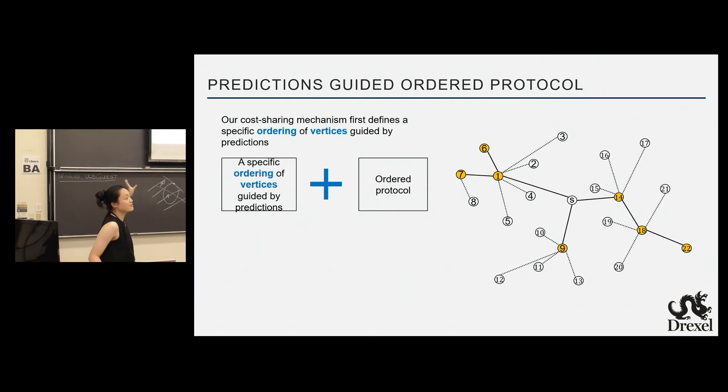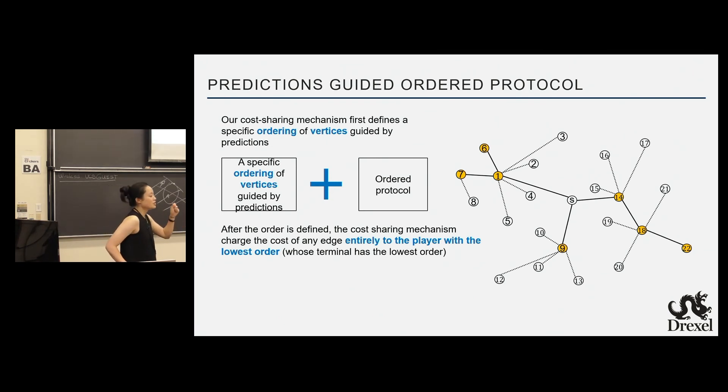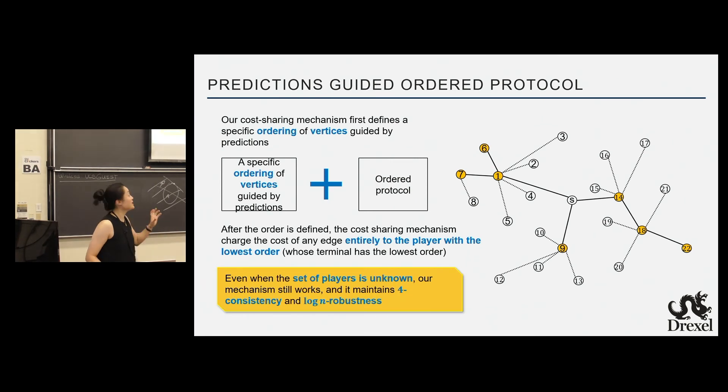Now taking this specific ordering defined by prediction, we're just going to simply apply our order protocol. That sounds fancy, but it's a constant cost function. So what that means is we're just going to charge the agent using this edge with the smallest order the whole cost. You're going to pay everything. Nobody else is going to pay nothing. It sounds a bit unfair, but our result actually, so this mechanism actually extends to the setting even when the set of players is unknown. So like we said before, the first prediction we consider is when the set of players we actually do know them. We just don't know where they are. So we have a prediction. But this result even extends to, we don't even know the set of users and we don't know their locations and we still get this 4 consistency and log n robustness.